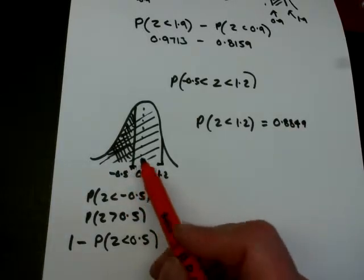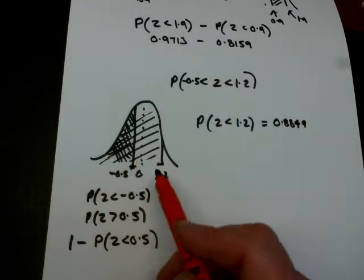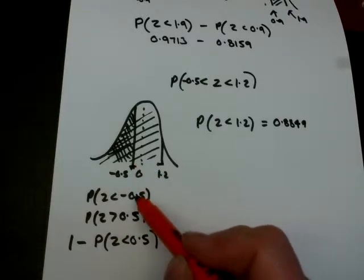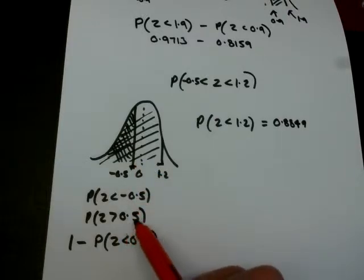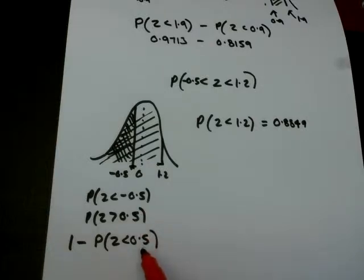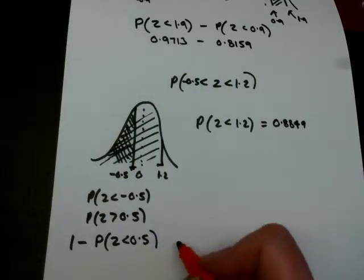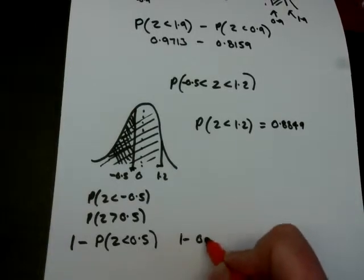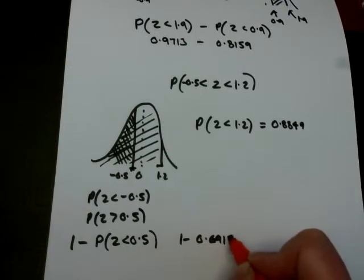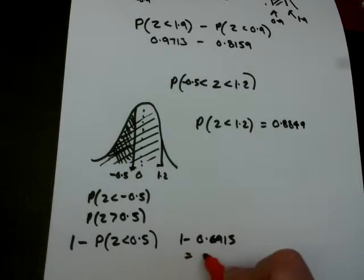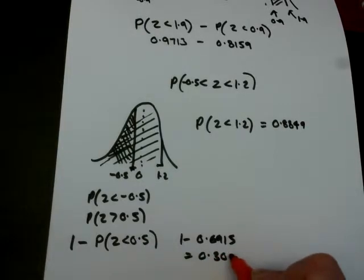The probability that I'm less than minus 0.5 can be found by knowing the fact that it's exactly the same as being greater than 0.5. And then we look that value up in the tables, and we find that 1 minus the probability of the z is less than 0.5. So we go to 0.5, it's 0.6915, so 1 minus 0.6915, which equals 0.3085.